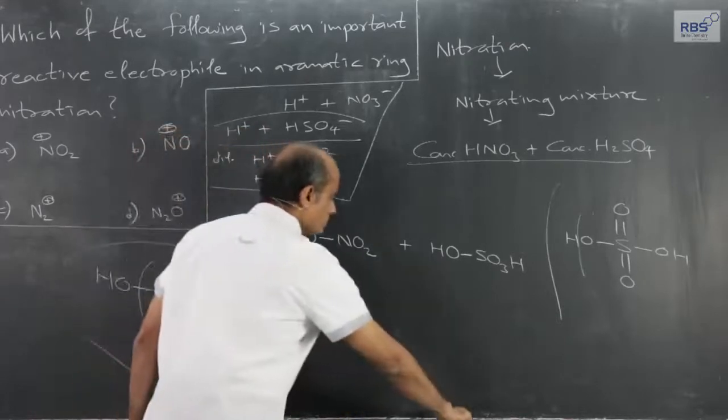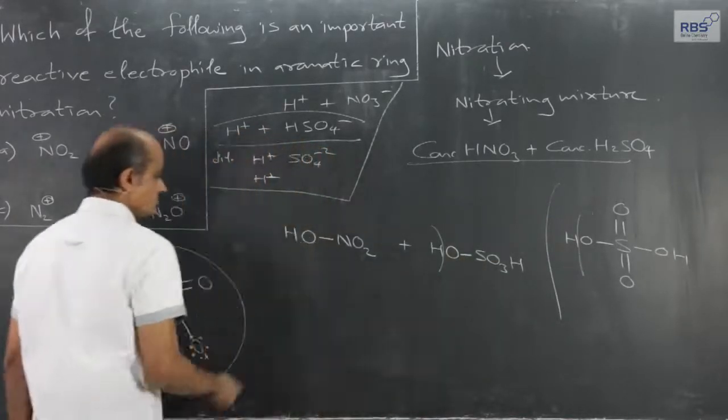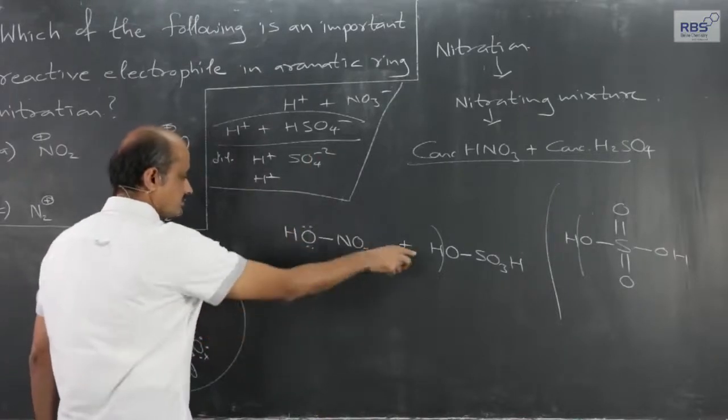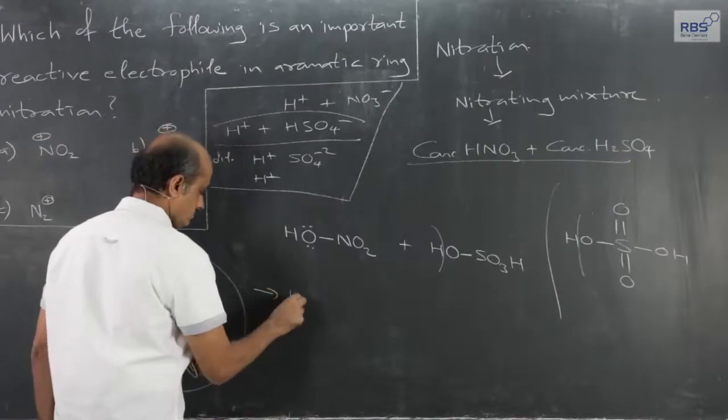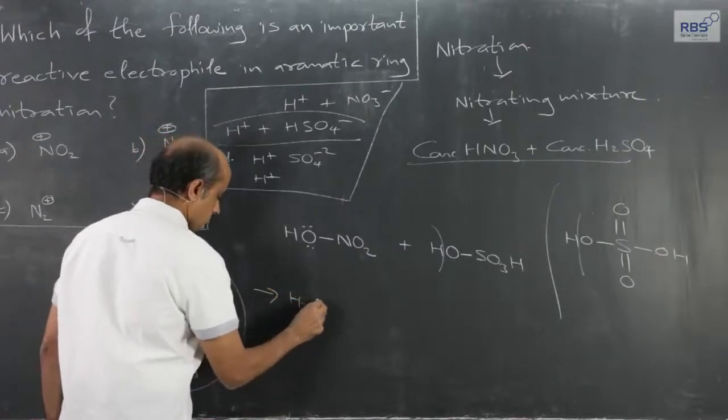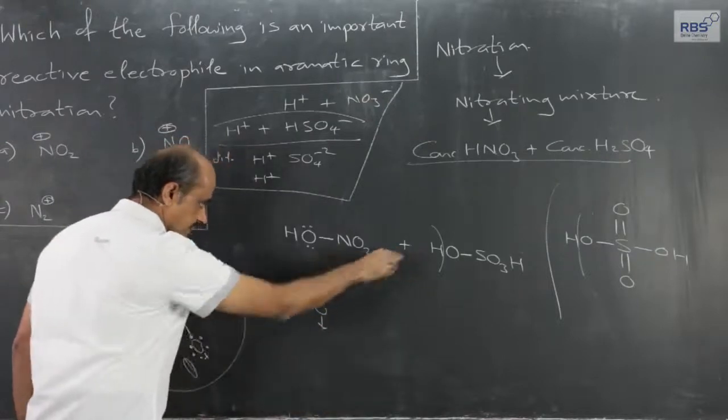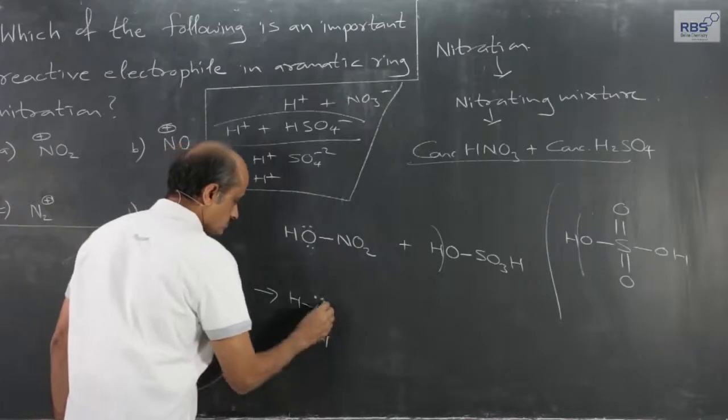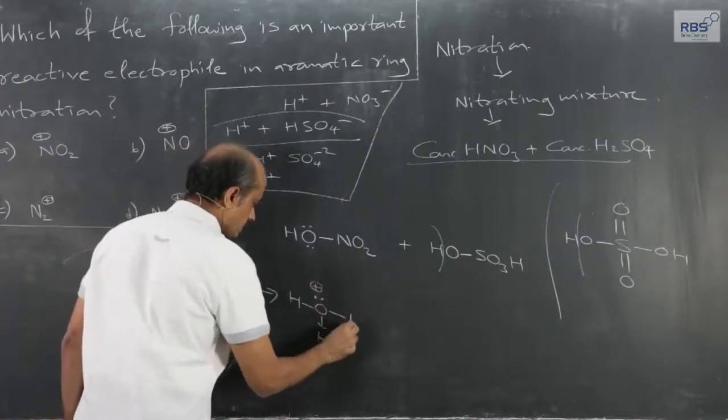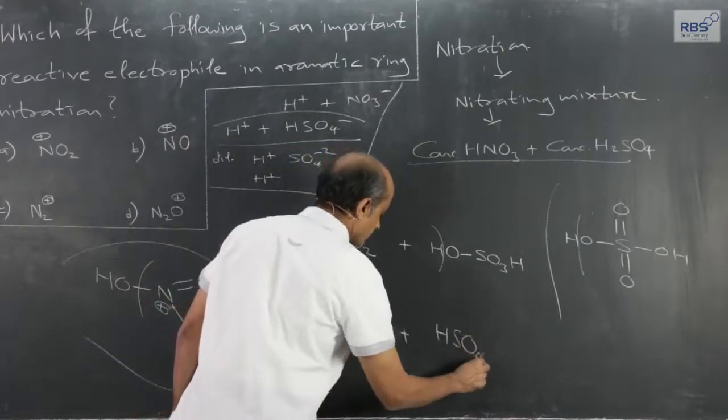And this one OH bond - in short, I have written it in this manner - and the lone pair of electrons on oxygen. Because of that, the hydrogen atom in the form of H+ ions develops a positive charge, forming HSO4- minus.